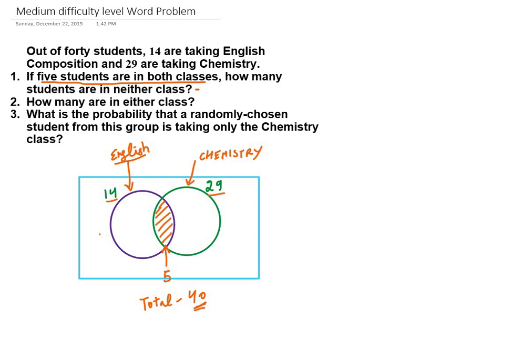Because there are some students which are common to both the classes, there will be some part where the intersection of English and Chemistry circles will happen. So we have drawn the Venn diagram like this, and the intersection portion will have 5 students who are both in English and Chemistry.